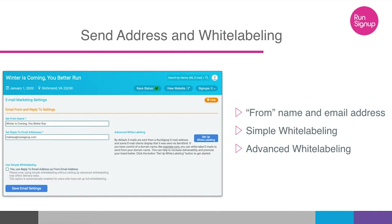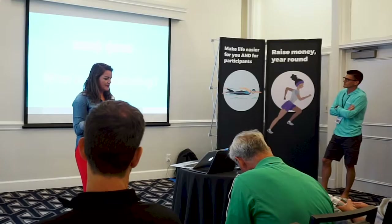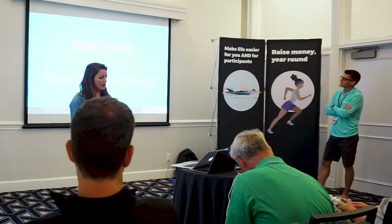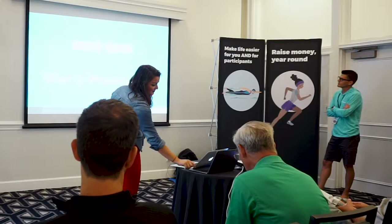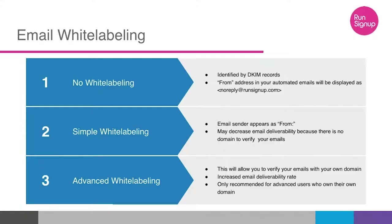We have options for simple white labeling and advanced white labeling. White labeling actually masks RunSignup to make it look like the emails are coming from your organization. We offer three types: no white labeling, where we send the email on your behalf from RunSignup; simple white labeling, where you're sending it but there's no authorization so some servers may send it to spam; and advanced white labeling, where you send from your own verified domain, which offers the best deliverability.